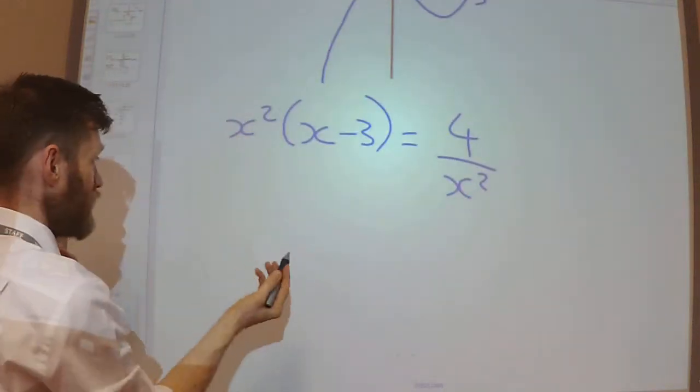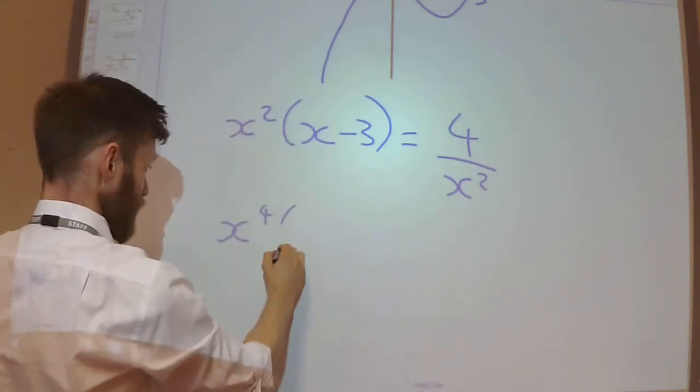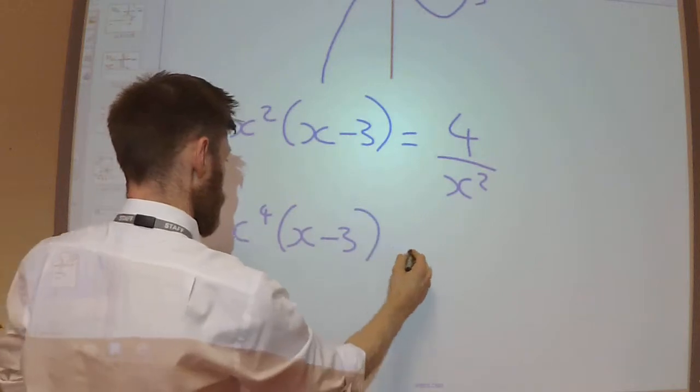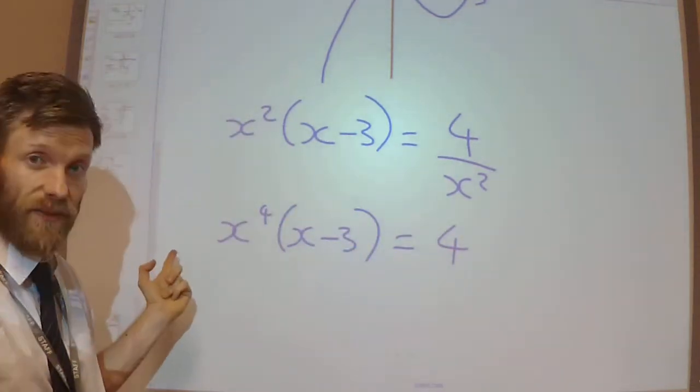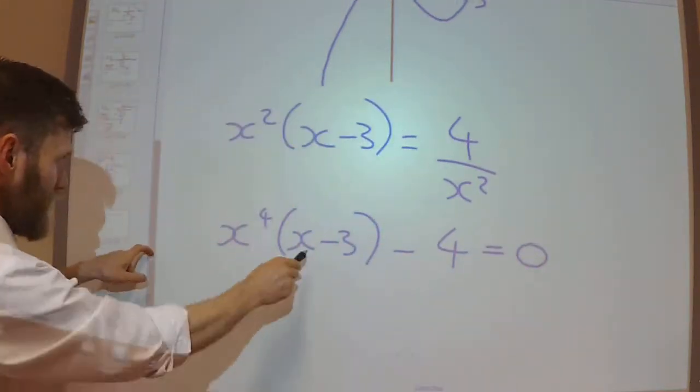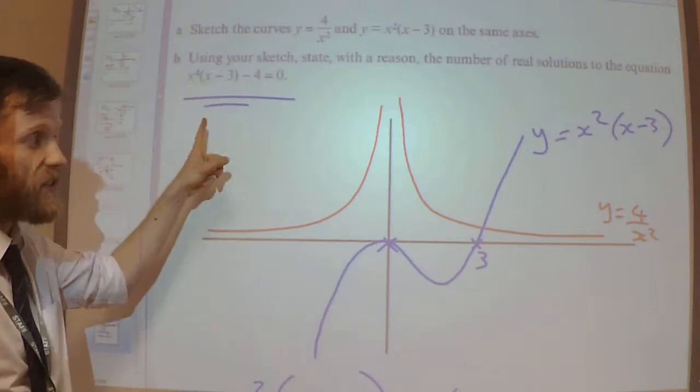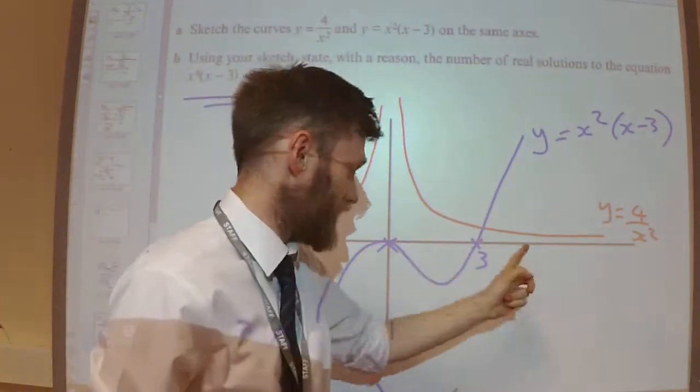So x² times x² would be x⁴. And then I would subtract 4. And so this is the same as this. So yes, this does refer to where the graphs intersect.